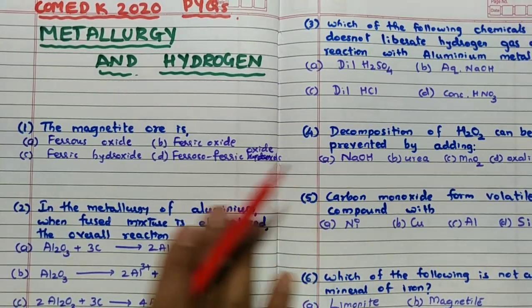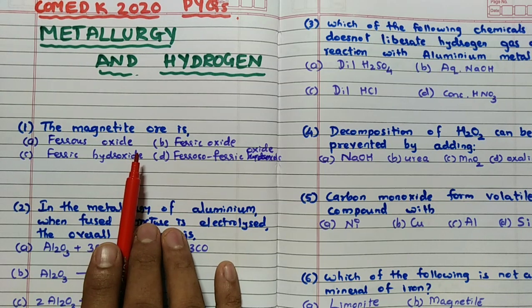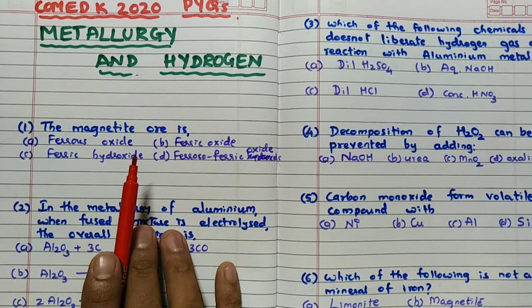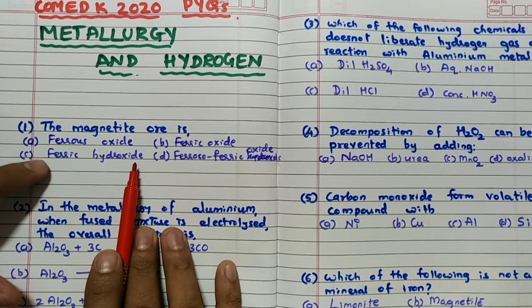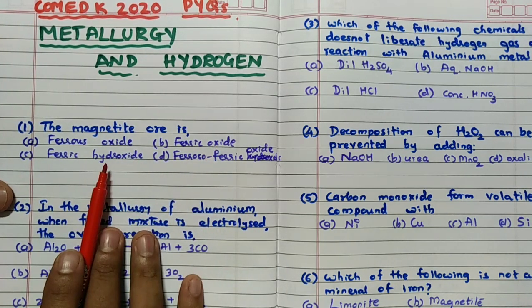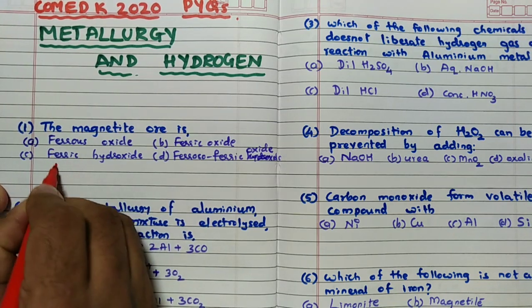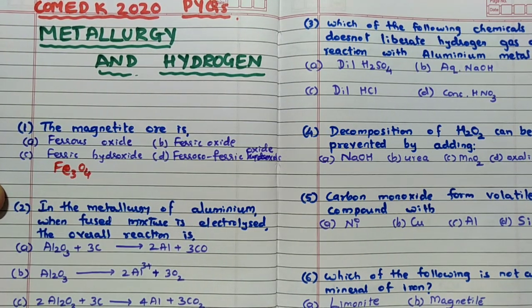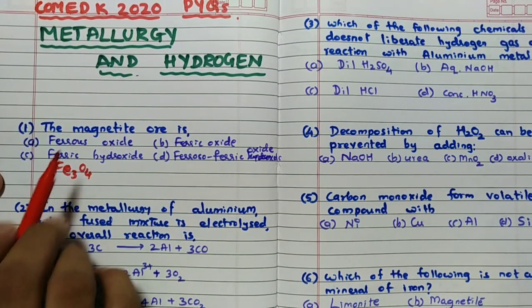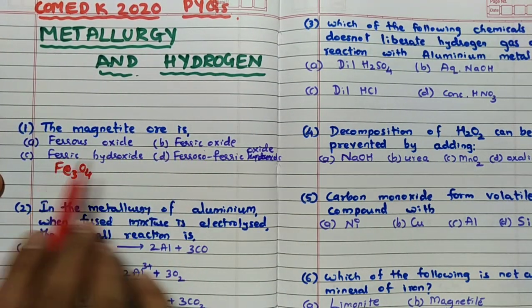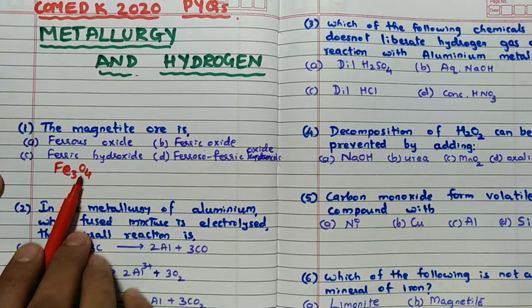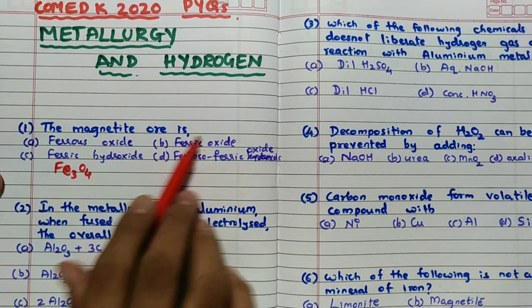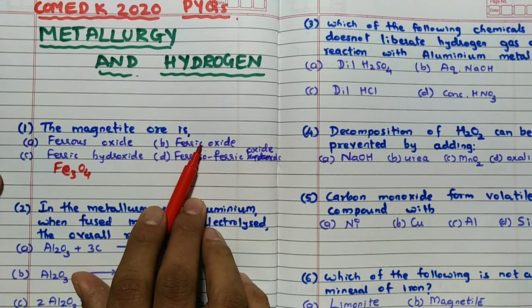Let us start. This is one question, from 2015 and previous year, three times it was asked this question, magnetite ore is. Remember, we know that magnetite ore formula is Fe3O4. So Fe3O4 means whether it is ferrous, ferric, ferric hydroxide, ferrozo-ferric oxide.